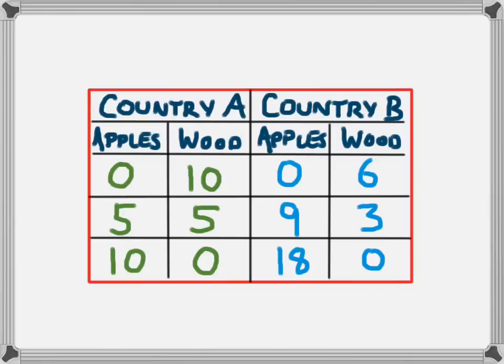To move from producing 5 apples, Country A would have to decrease the amount of wood they produce to increase their apples, and Country B in the same way. With their one-to-one ratio — because they can produce 10 apples or 10 units of wood at their maximum — Country A, for every extra apple they produce, it costs them one unit of wood. And for every one unit of wood they produce it costs them one apple. So Country A could move up to 6 apples and they would reduce down to 4 units of wood. The opportunity cost of apples for Country A is one unit of wood.